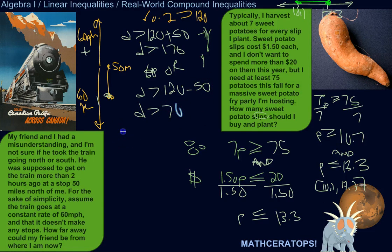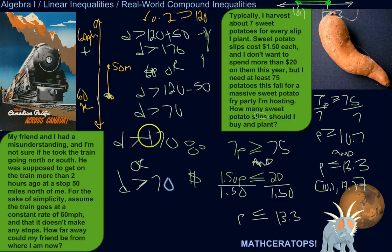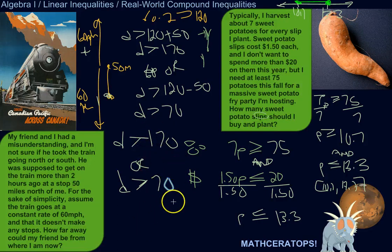So his distance is either greater than 170 miles if he went north, or greater than 70 miles if he went south. Either way, he's at least 70 miles away from me. That could have been a bad example.